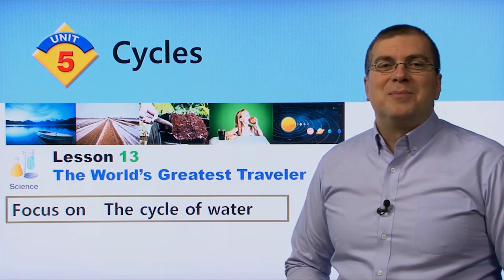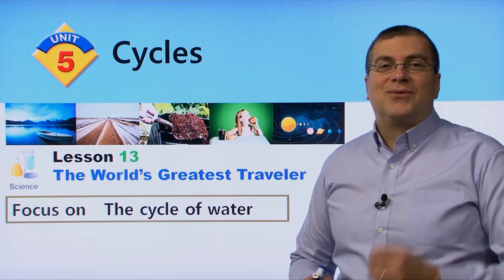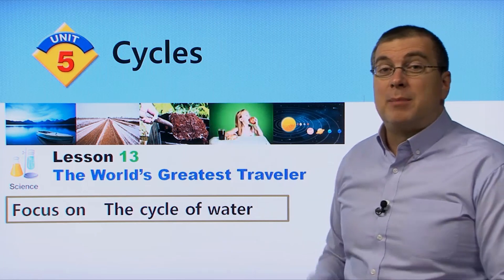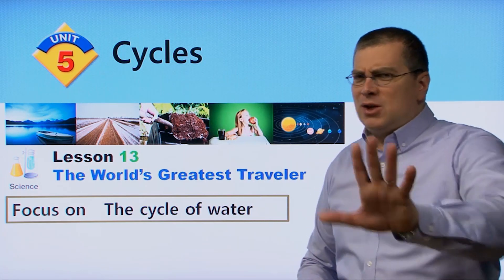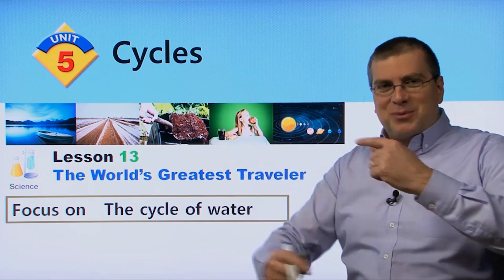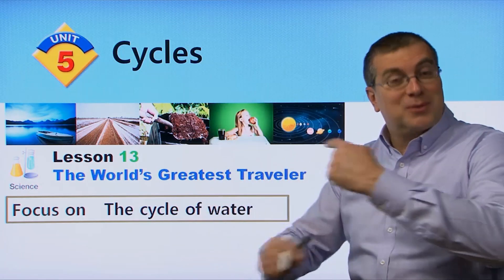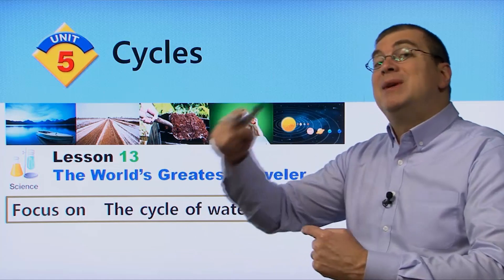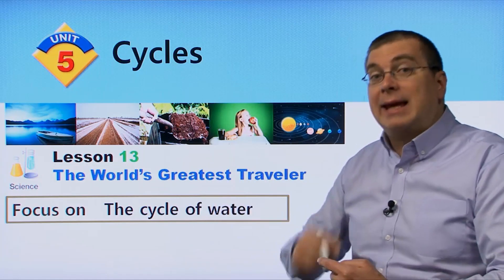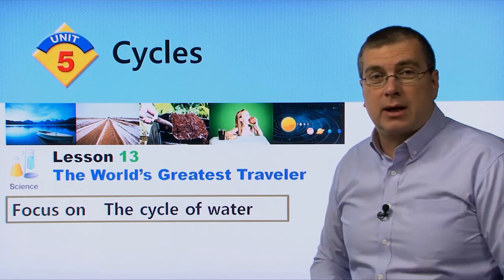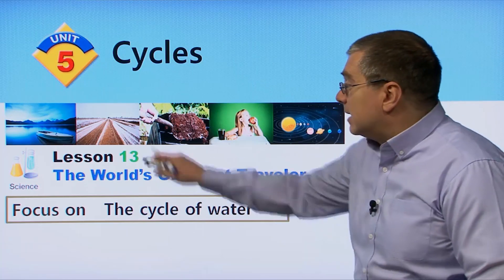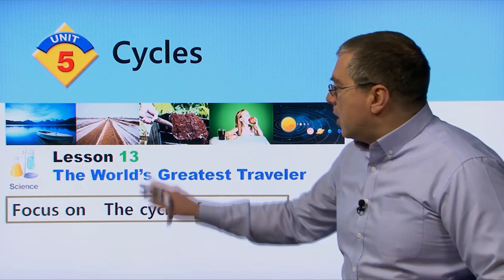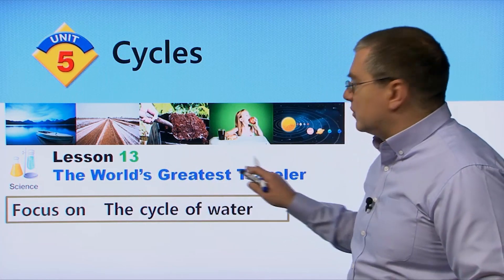Hello everybody, welcome back to Reading for Vocabulary. We're on unit 5 — we're talking about cycles. Not your bicycle, but something that repeats like a circle, like the wheels on your bicycle going around and around. In lesson 13, we're talking about the world's greatest traveler.